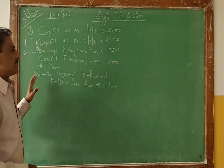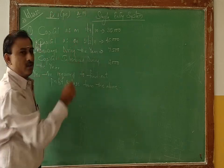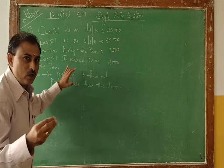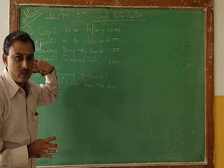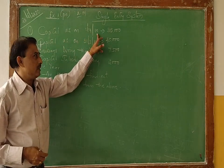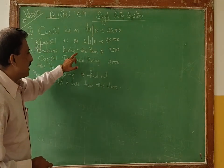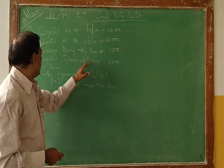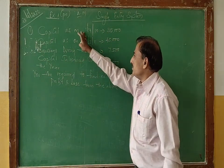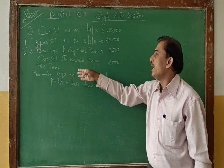Let us look at the first problem. Our financial year runs from April to March, starting 1st April and ending 31st March. The information given is: capital as on 1st April 2010 is 35,000; capital as on 31st March 2011 is 45,000; drawings during the year are 7,500; and capital introduced during the year is 2,000. We are required to find out the profit or loss.